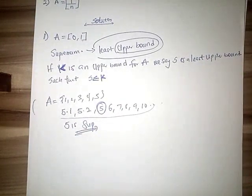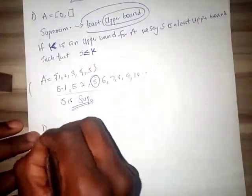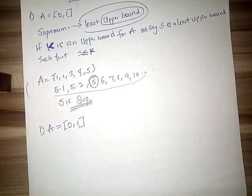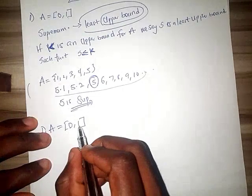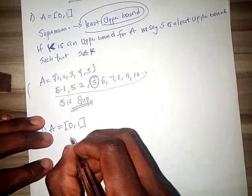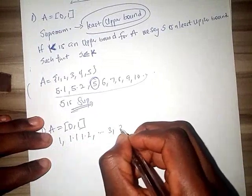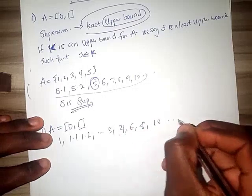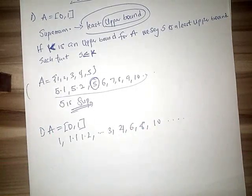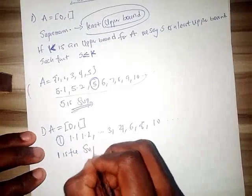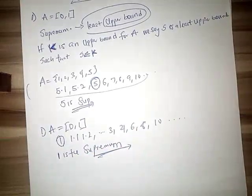Now let's go for this one, A equal to (0, 1). This is a closing tower which simply means there is millions of numbers between zero and one. Now let's list the upper bound of this one. Upper bound is what? 1.1, 1.2, 1.3, 1.4, 1.6, 1.8, 1.10, dot dot dot. You have many upper bounds. Now okay, out of all this what is the least? One. Then one is the supremum without stress. I hope you understand what supremum is.